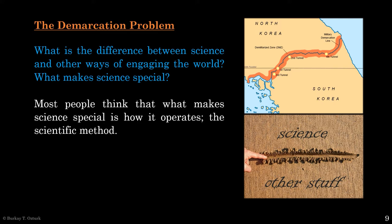Most people think that this is easy. The difference between science and other stuff is how science operates, the scientific method. So we should ask, what is the scientific method? And once we discover the answer to that question, then we will have found what makes science special. That would solve the demarcation problem.